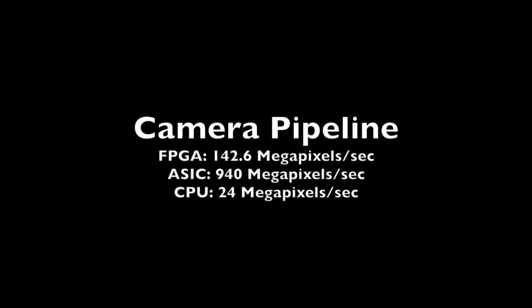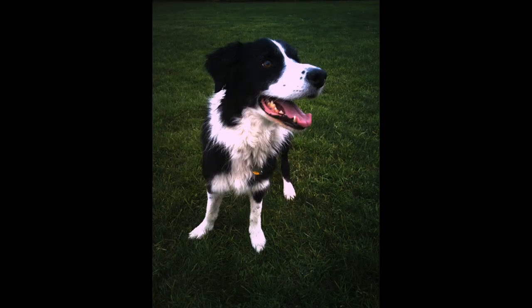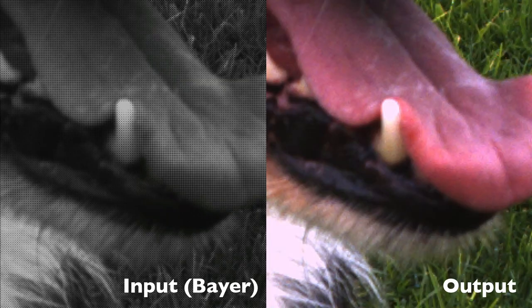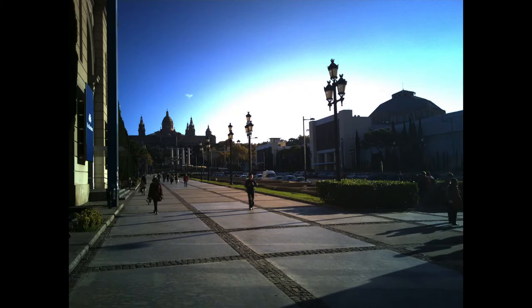We also implemented a camera pipeline with functionality similar to commercially available ISPs, including stages for demosaicing, white balance, and color correction. Here we show some example frames and a close-up of the conversion from raw data into the final image.